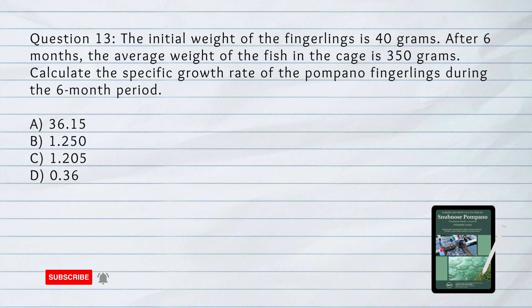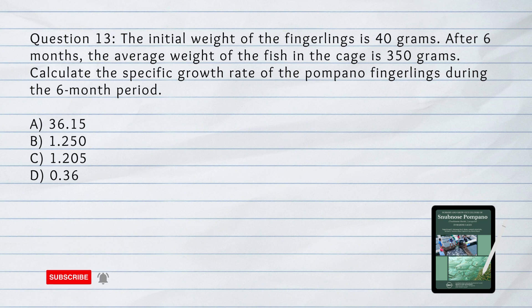Number 13. The initial weight of the fingerlings is 40 grams. After 6 months, the average weight of the fish in the cage is 350 grams. Calculate the specific growth rate of the Pompano fingerlings during the 6-month period. A. 36.15. B. 1.250. C. 1.205. D. 0.36.